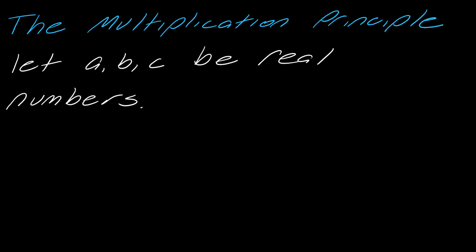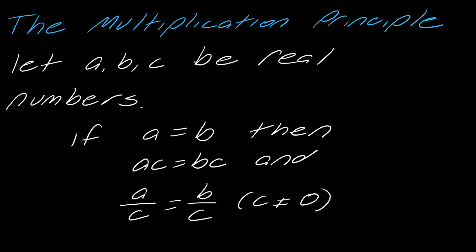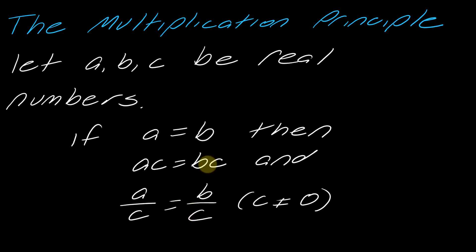Now let's talk about the multiplication principle. If a equals b, then a times c equals b times c, and a divided by c equals b divided by c. If you're going to multiply something to one side, you have to multiply it to the other. If you're going to divide something on one side, you've got to do it on the other.